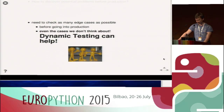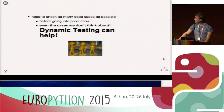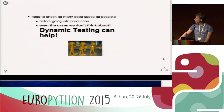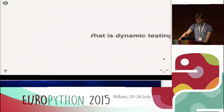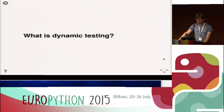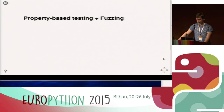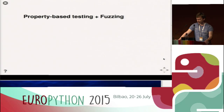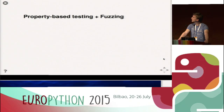Randomized testing — or as I call it, dynamic testing — is one such tool to help us find problems before going into production, to reduce stress for us and for our customers. So what do I mean by dynamic testing? Basically, I mean both property-based testing and fuzzing.